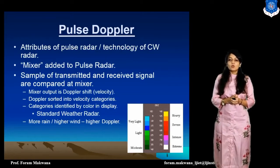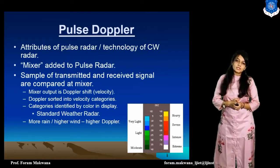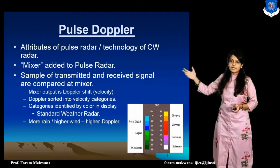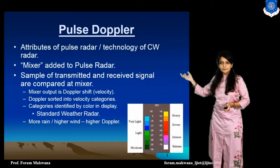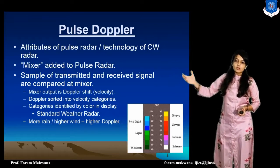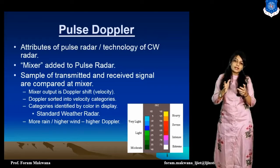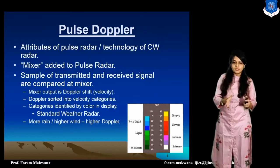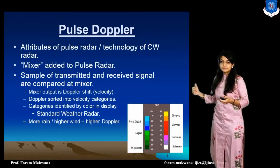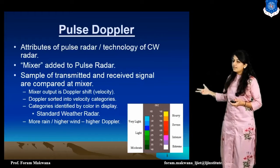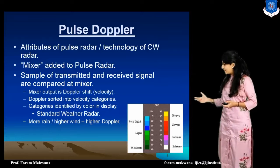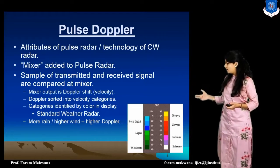Now, what do you mean by Pulse-Doppler radar? The Pulse radar can incorporate the technology of continuous wave radar — we can add a mixer to the Pulse radar. The samples of transmitted and received signals are compared at the receiver. The mixer output is the Doppler shift. That Doppler signal is sorted into velocity categories and those categories are identified with the standard weather radar.